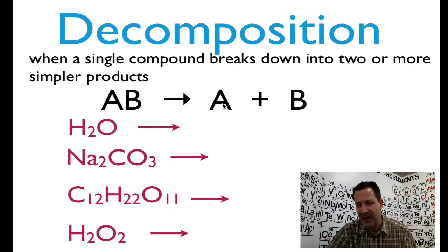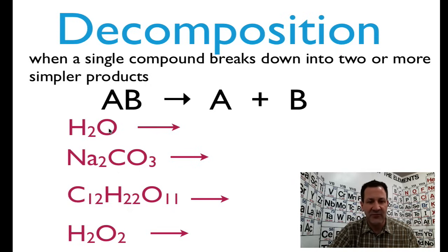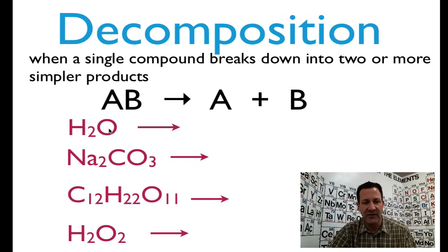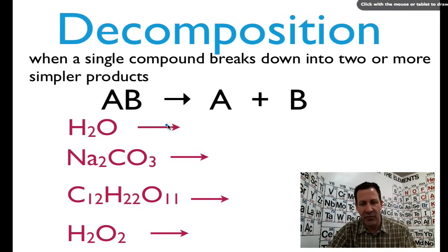So these are the products, A plus B, and this is our compound on the left-hand side. You see we have a single compound on the left-hand side of our chemical equation. So here we have some decomposition reactions that we're going to do, or some compounds that we're going to decompose. Let's go through and see if we can figure out what the products are going to be, and then also balance those chemical equations.